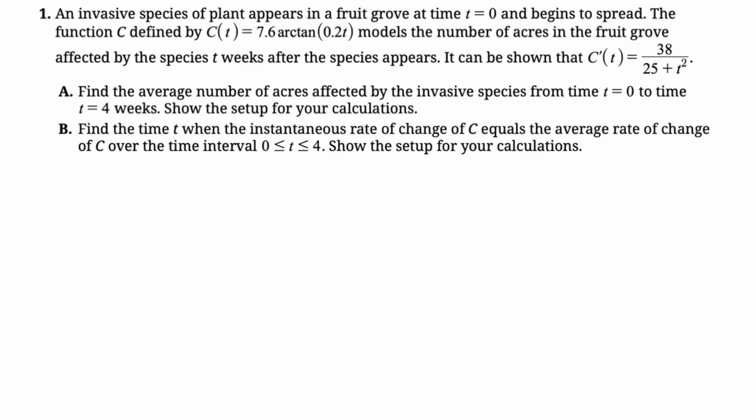We've got an invasive species appears in a fruit grove and begins to spread. The function C is given as 7.6 arctan of 0.2T, models the number of acres in the fruit grove affected by the species T weeks after the species appears. It can be shown that C prime is 38 over 25 plus T squared.